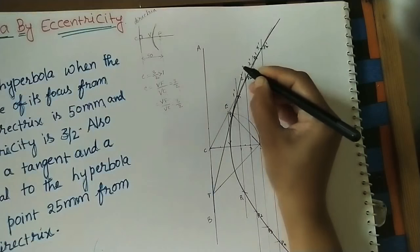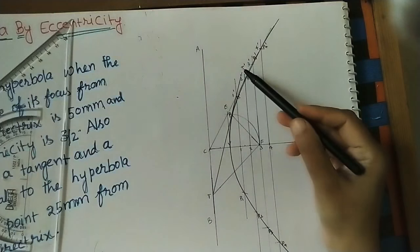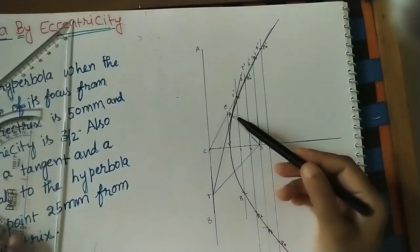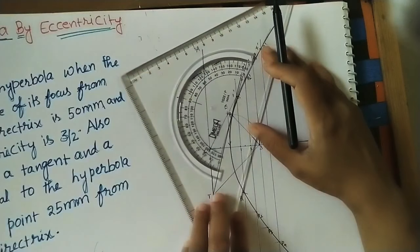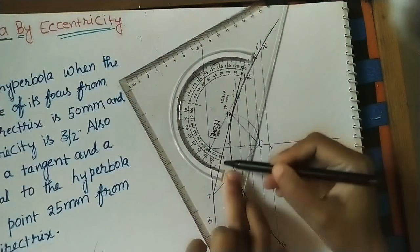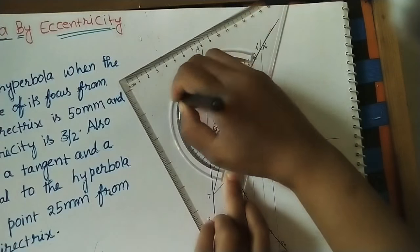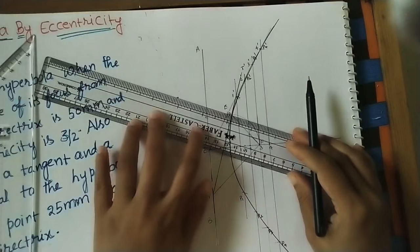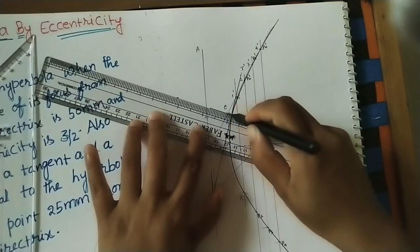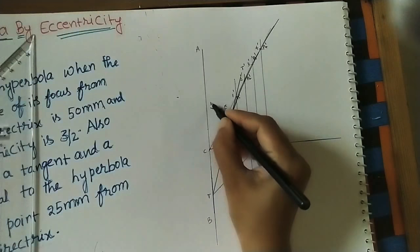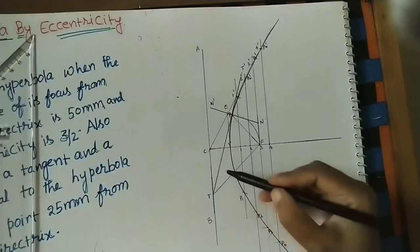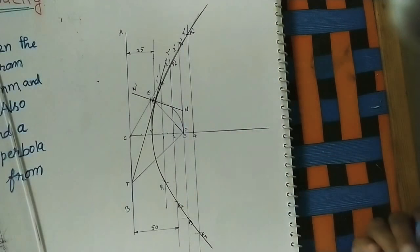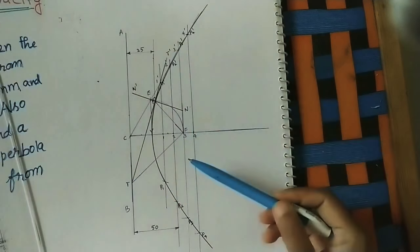The normal is perpendicular to the tangent, so at P draw a line at 90 degrees to the tangent. Join this point to P — this is the normal. Mark it as N-dash to N. So we now have: the tangent T–T-dash and the normal N–N-dash, with 90 degrees between them at point P.